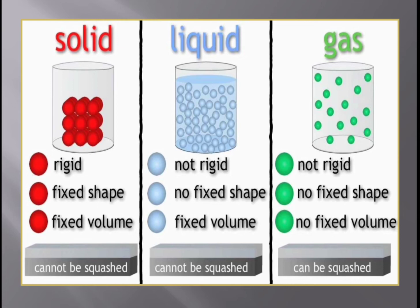These are the different properties of matter: solids, liquids and gases. Liquids and gases are called fluids because they have the ability to flow.